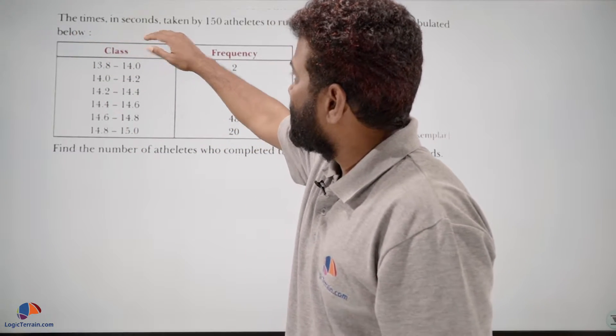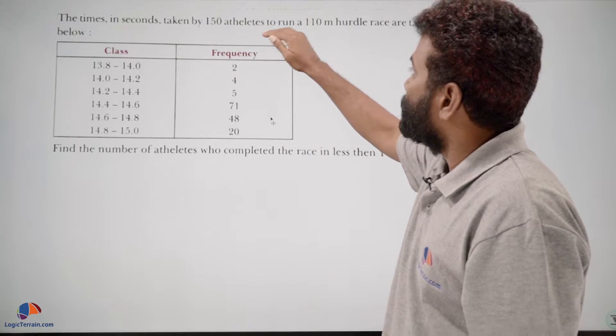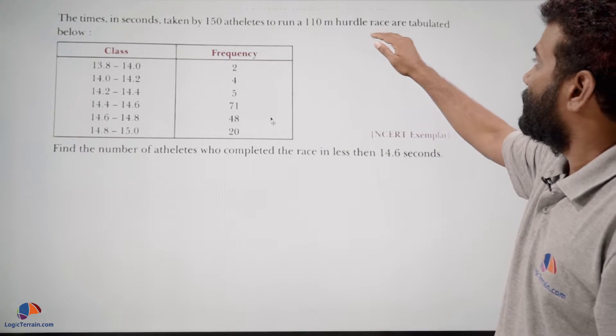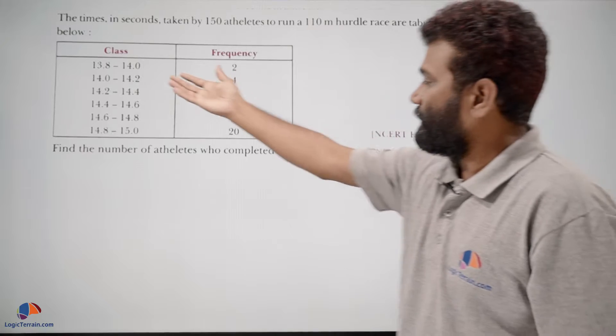The times in seconds taken by 150 athletes to run a 110m hurdle race are tabulated here.